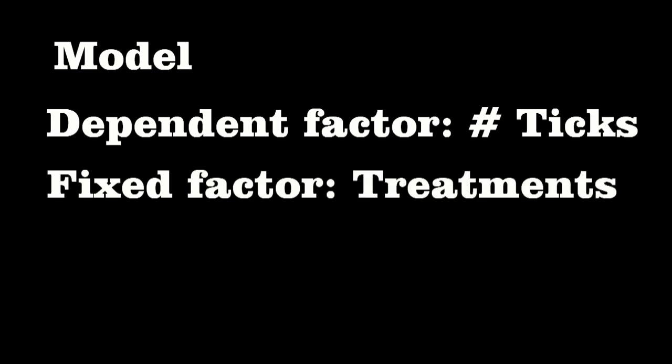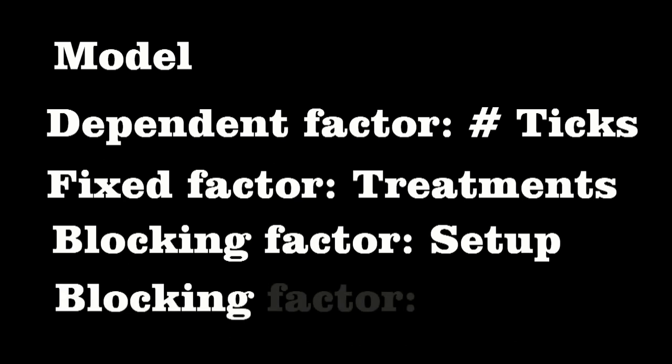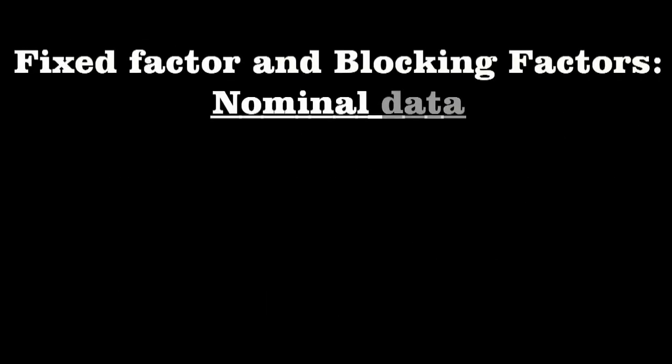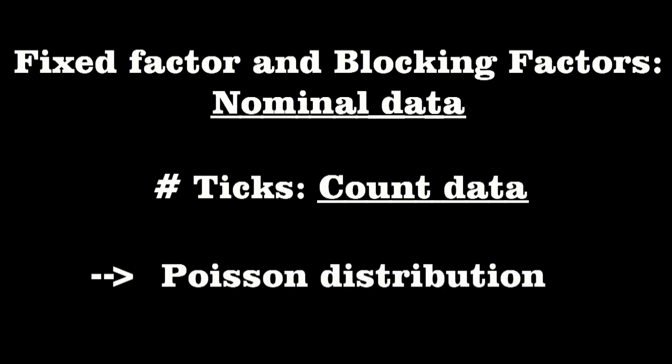The counted number of ticks is the dependent factor in the model. The fixed factor consists of the different treatments — four levels referring to the different compartments: control, only structure, only feces, and feces plus structure. Experimental setups and rounds are included as blocking factors to account for variation. The fixed and blocking factors are all nominal data, whereas the number of ticks contains count data, implying a Poisson distribution, so the analysis was carried out under a Poisson distribution.